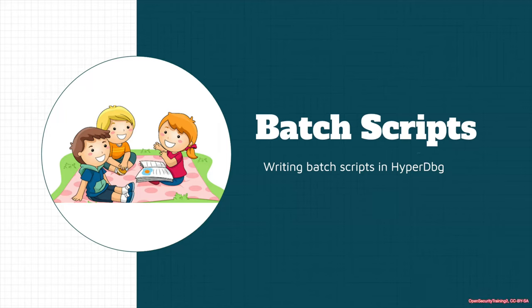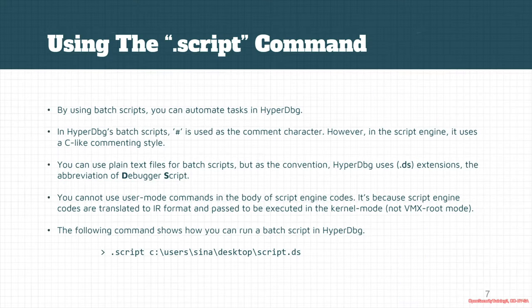Another important part of automation is batch scripts. By using batch scripts, we can automate tasks in HyperDVG. Batch scripts use the sharp sign as the command character. However, this is a little bit different in the S script engine. The S script engine has a C-like command style. So if you want to make comments in batch scripts, you use the sharp sign, while in S scripts you should use a C-like commenting style.